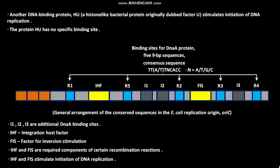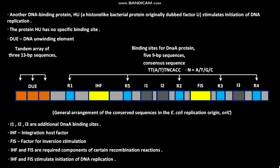The conserved sequences in the E. coli replication origin OriC have a region called the DUE, which stands for DNA Unwinding Element. The DUE is a tandem area of three 13 base pair sequences with a consensus sequence: GATCTNTTTTTTTT, where N represents A, T, G, or C. The horizontal arrows indicate the orientations of the nucleotide sequences — a left-to-right arrow denotes sequence in the top strand, and a right-to-left arrow denotes sequence in the bottom strand.